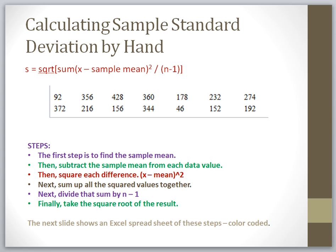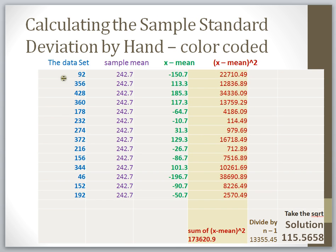Here's my data set in blue — this is my original data set — and here's the sample mean. My first step is to subtract the sample mean from each data point. I took each x value in the data set and subtracted my sample mean from it, giving me 14 different values. My next step was to square each of those values, which gives me 14 more values.